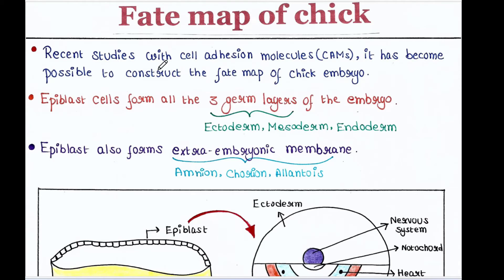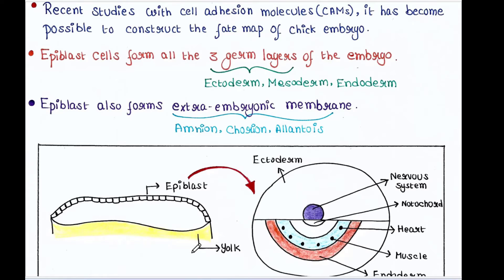Recent studies with cell adhesion molecules have made it possible to construct the Fatemap of the chick embryo. This is the embryo — here we have epiblast cells and this is the yolk. Epiblast cells form all three germ layers of the embryo: ectoderm, mesoderm, and endoderm.